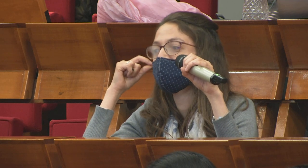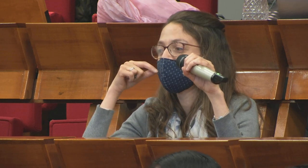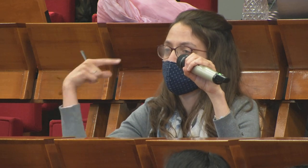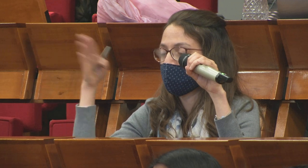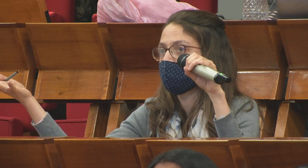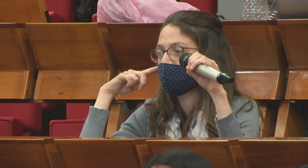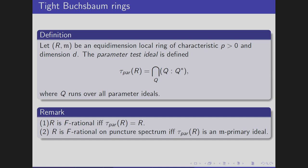I don't fully understand. You mean replacing tight closure with Frobenius closure? I'm not sure we can define a Hilbert polynomial via Frobenius closure, because Frobenius closure may behave very differently. I'm not sure. Thank you.